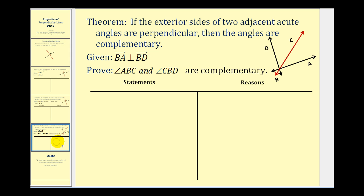Now let's take a closer look at the theorem we're going to prove. If the two exterior sides of two adjacent acute angles are perpendicular, then the angles are complementary. So these two black rays, BD and BA, would be the exterior sides of the adjacent angles ABC and angle CBD.